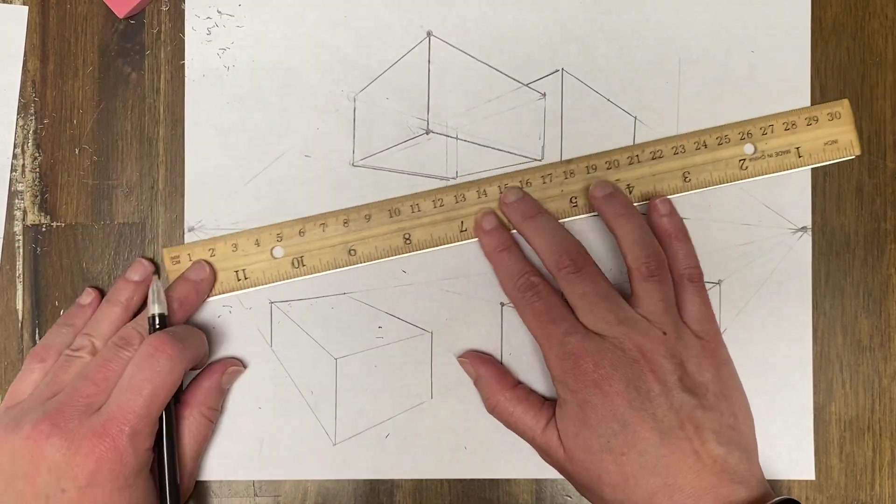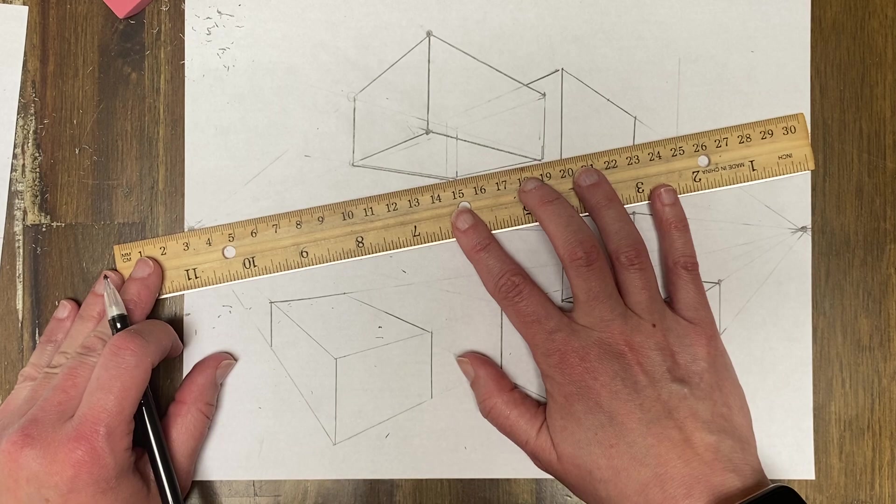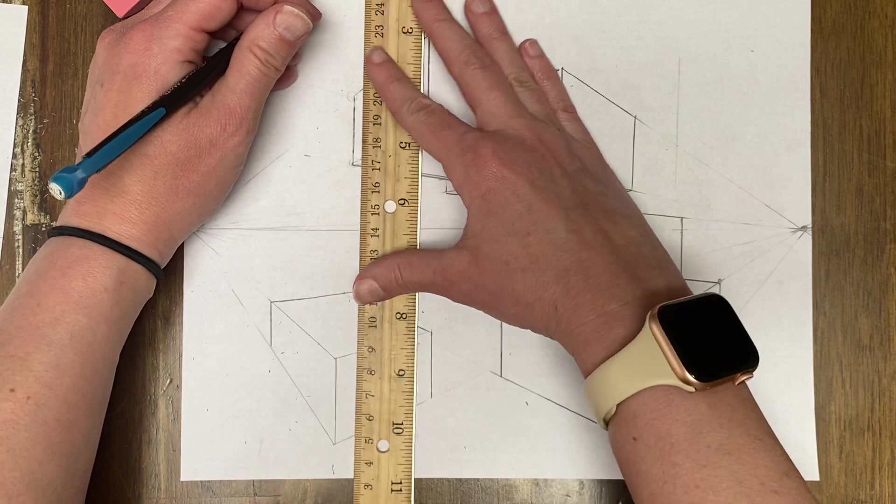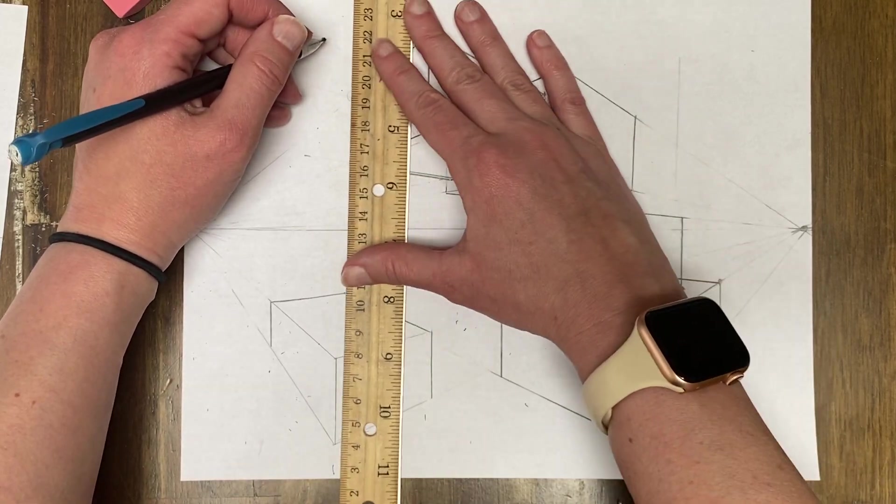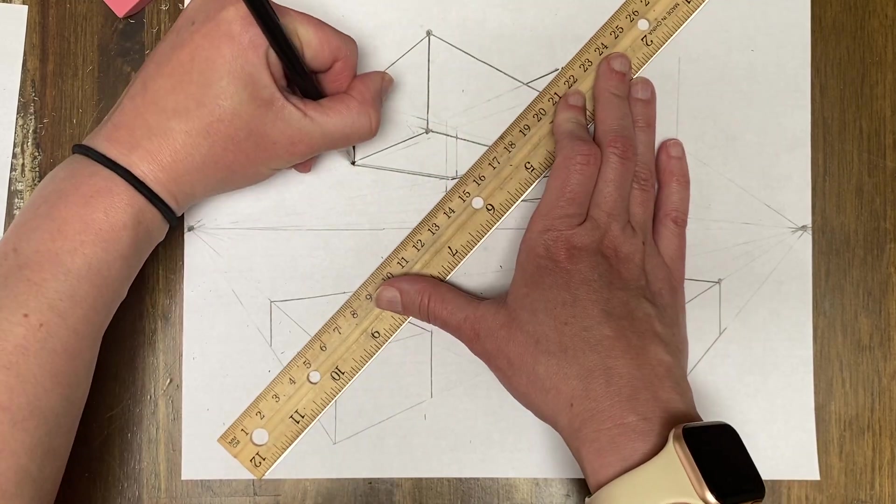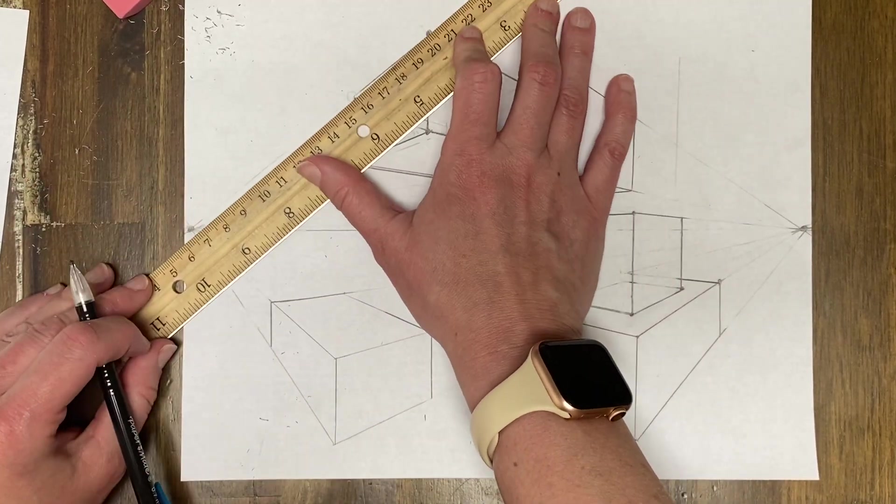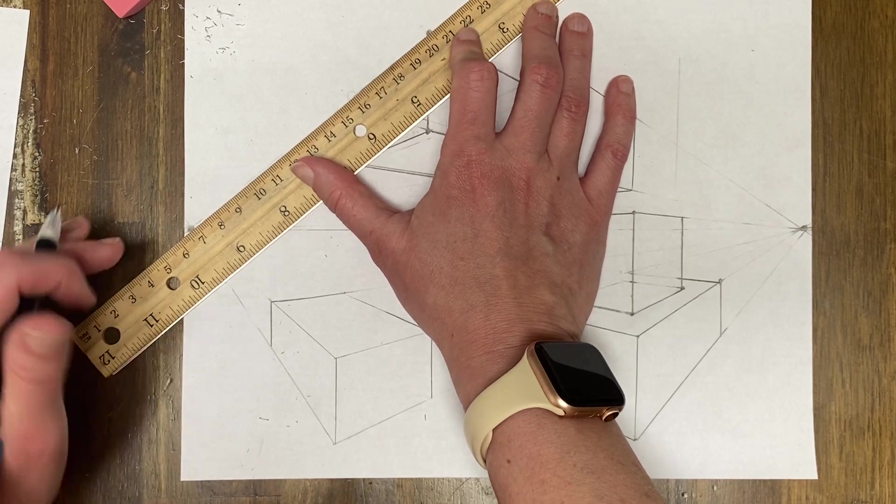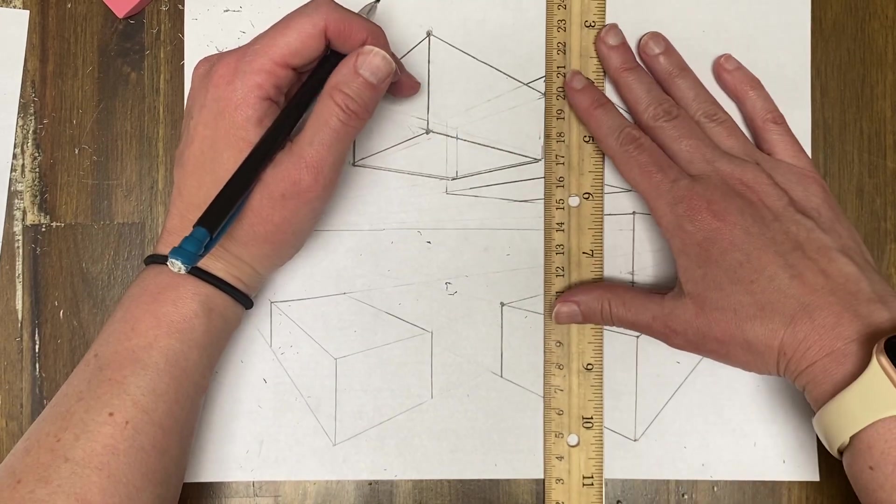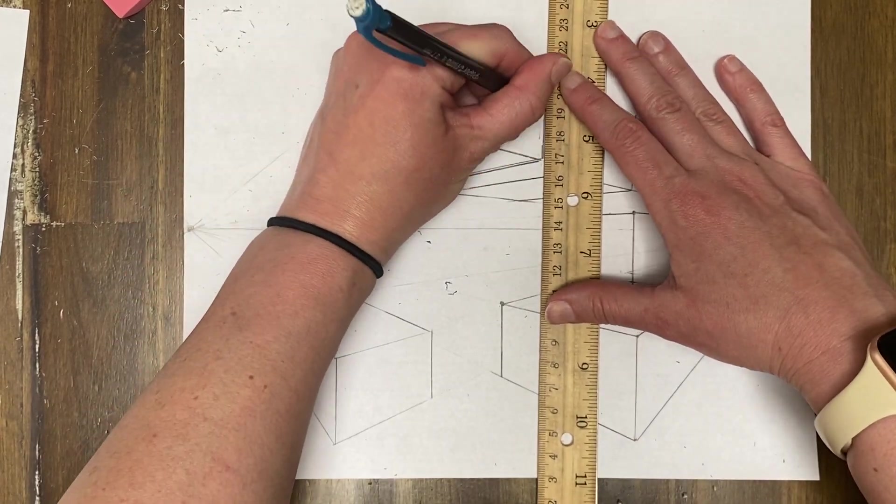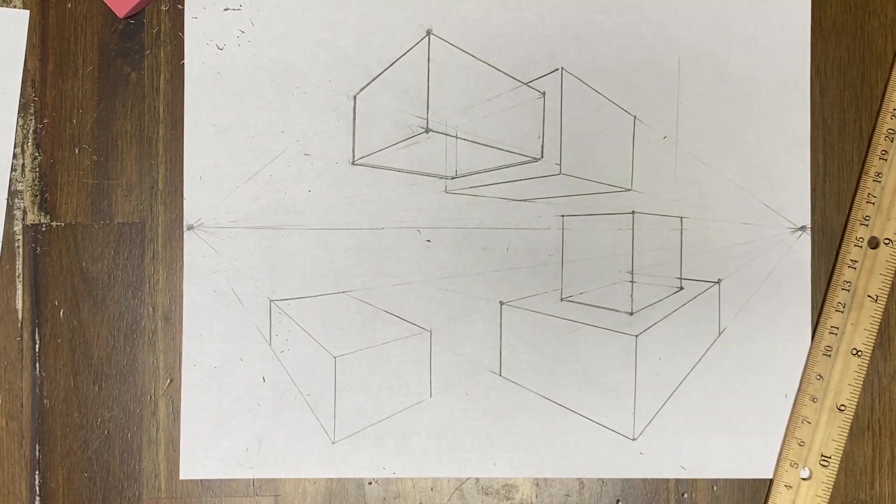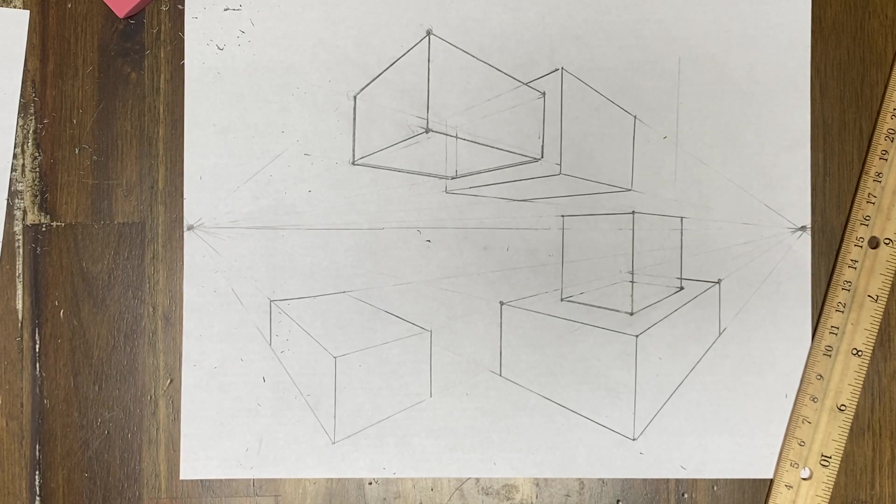Again, you're not drawing random lines. Well that kind of didn't line up. Sorry about that guys. No random lines. Everything is either parallel to edges, right? Or if it's going back, it's going back and touching, meeting up at that vanishing point. And let's just get this a little bit darker. Okay. So we got box on top of a box, box coming out of a box. Oh my goodness.